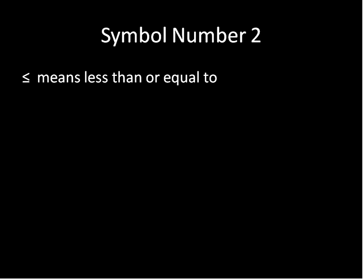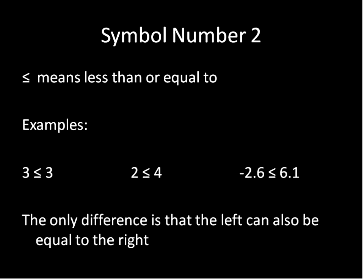Let's look at a symbol that's very similar. This one here means less than or equal to. Some examples of less than or equal to include 2 is less than or equal to 4, negative 2.6 is less than or equal to positive 6.1, and 3 is less than or equal to 3. You'll notice that in all cases, the number on the left is smaller or less than the number on the right, except when they're equal. So the only difference between our less than or equal to symbol is that the numbers on the left and the right can be equal to each other.